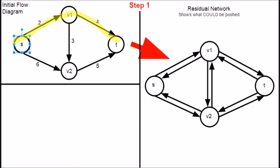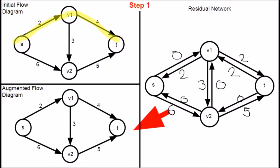Therefore, pushing 2 along the path will give us 0 from source to v1 with 2 being pushed back, and 2 from v1 to sink with 2 being pushed back, as the edge has a capacity of 4. As for the rest, we have not pushed any value. Therefore, the original capacity can still be pushed, but 0 being pushed back the other way.